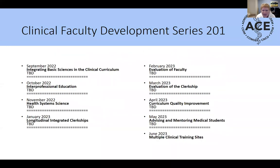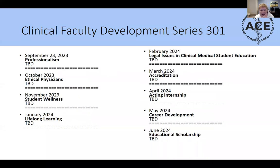Next year we get into more complicated, cutting-edge curriculum topics like integrating basic science, interprofessional education, and health system science. When we get to 301, we'll tackle challenges like professionalism, ethical physicians, wellness, lifelong learning, accreditation, and how to make a career out of being a medical educator. You can get CME credit for each hour, a certificate if you complete 70% of any one series, and then 70% of all three series.